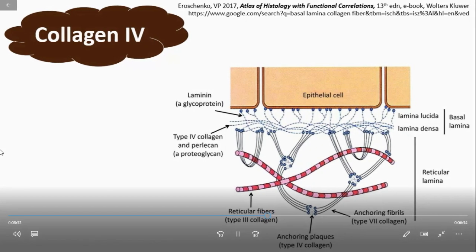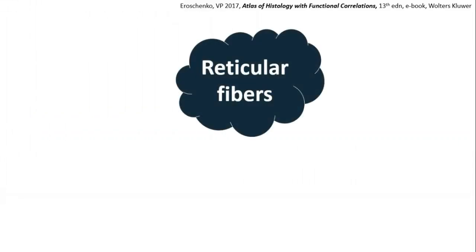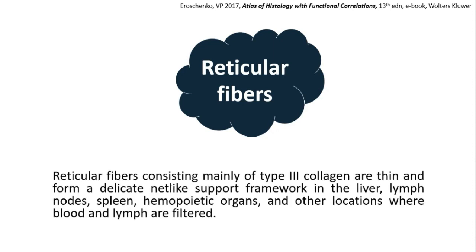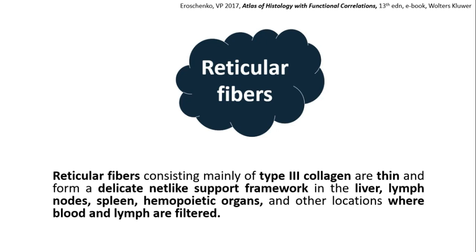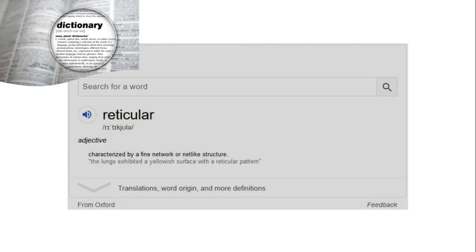Next, we will learn about reticular fibers. Reticular fibers consist mainly of type 3 collagen. They are thin and form a delicate net-like supportive framework, situated in the liver, lymph nodes, spleen, hemopoietic organs, and any organs where blood and lymph are filtered. The term 'reticular' comes from the fact that these fibers form a delicate net-like framework — 'reticular' means fine network or net-like structure.